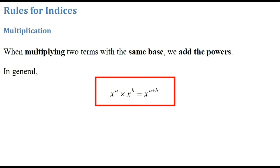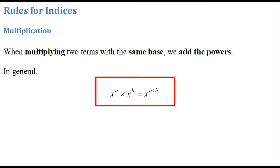Mathematically, we would say that if we have two terms x to the a multiplied by x to the b — both of these terms have the same base and the base is x — when multiplying, we add the powers to give us x to the power a plus b. Whenever we multiply two terms with the same base, all we do is add the powers.